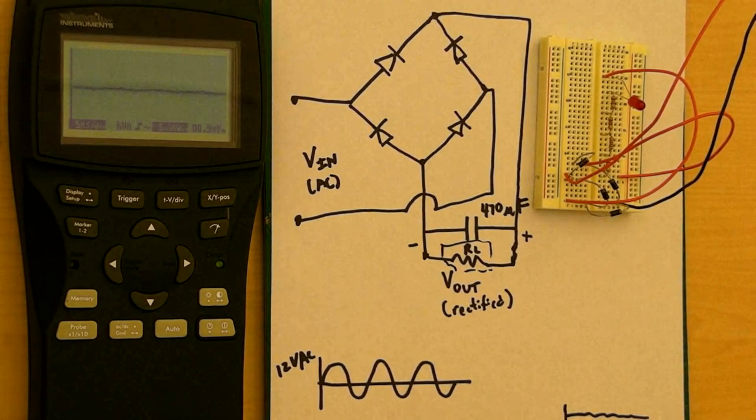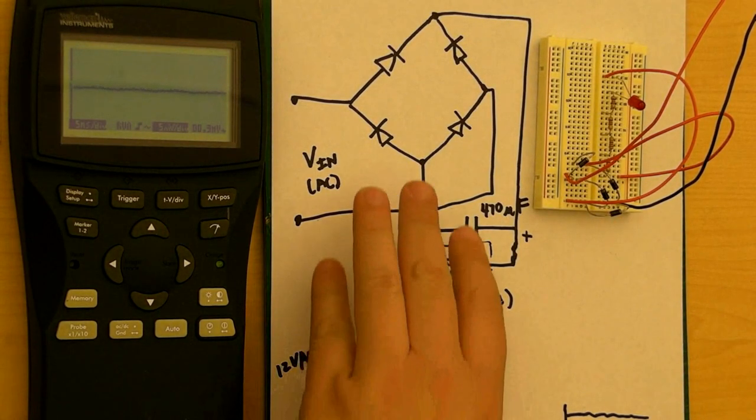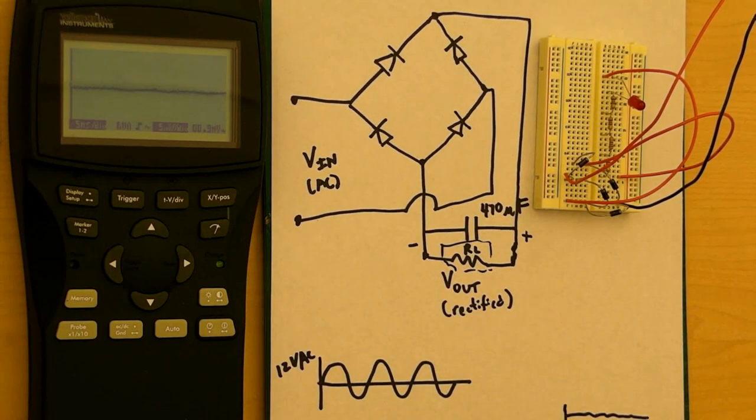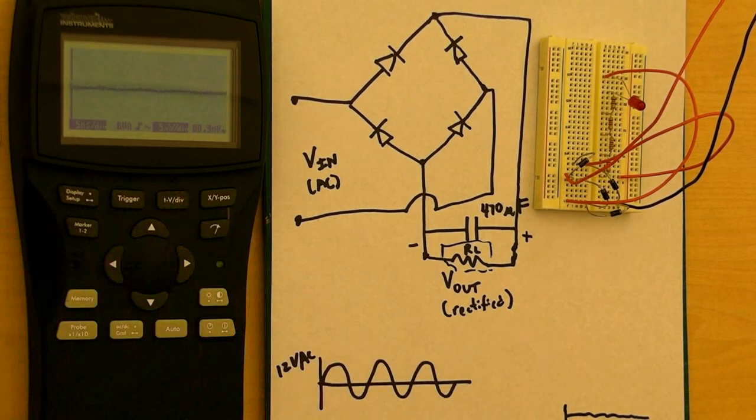This is Professor Thad Starner. Today we're going to continue our discussion on the full wave rectifier, taking the circuit from the last lesson and actually putting it onto a protoboard here. We are going to use an oscilloscope to check what the circuit actually does.